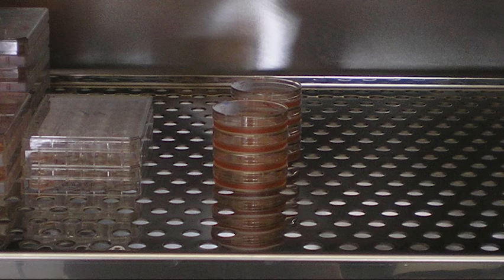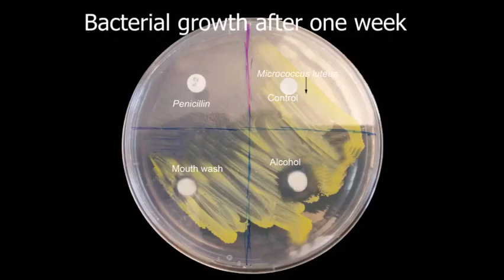Turn the petri dish upside down to prevent condensation from running over the agar surface. Store the petri dish in the incubator. Keep the petri dish upside down and horizontal. After getting your culture back, label the materials you placed on the agar and the results after one week. Use stippling — drawing using small dots — to show where the yellow bacteria colonies have grown. Explain your results.